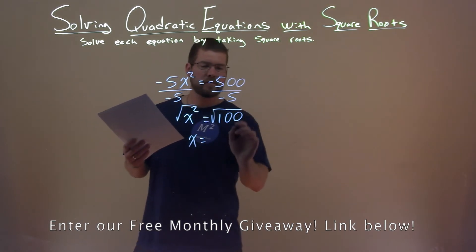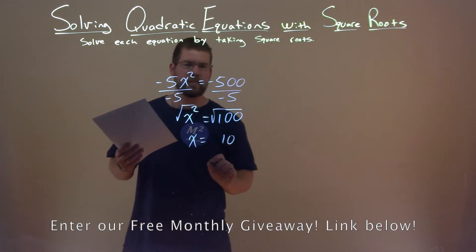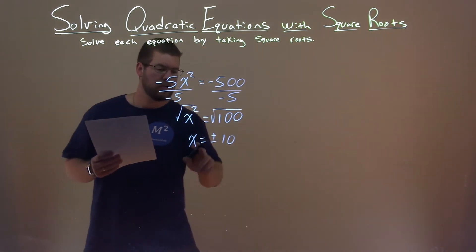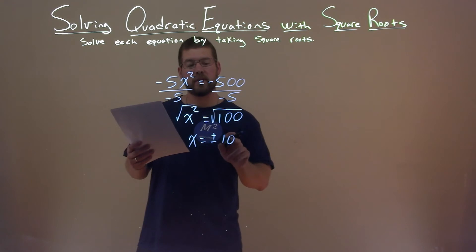Now the square root of 100, hopefully you know that, that's 10. But since we're taking it over the equal sign, we can't forget the plus and minus here. So we have x equals plus or minus 10.